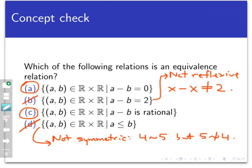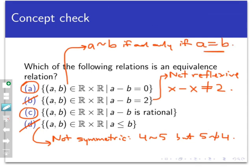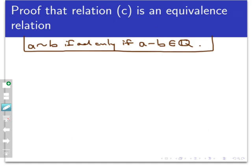Relation A is an equivalence relation because it's actually a well-known relation once you scratch the surface. If ab belongs to this relation — meaning a is related to b — that means a minus b equals 0, which just means a equals b. So relation A is a fancy way of expressing equality on real numbers, and we know from basic arithmetic axioms that equality is reflexive, symmetric, and transitive. Now let's focus on relation C and prove that it is an equivalence relation — that this relation tilde, where a is related to b if and only if a minus b is a rational number, satisfies all three properties.